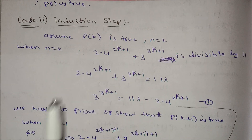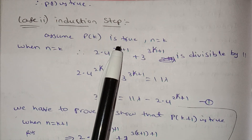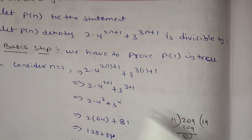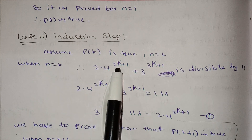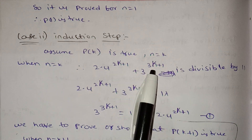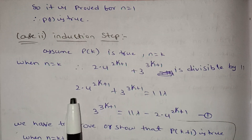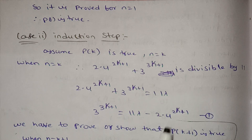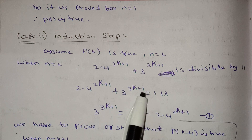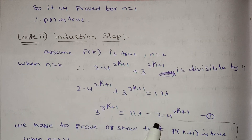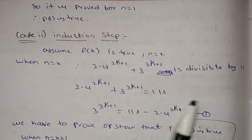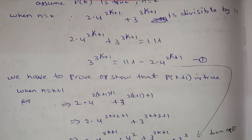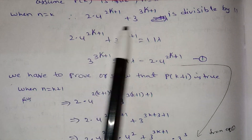P(1) is true. Next, the second step is the induction step. Assume P(k) is true when n equals k. So 2 into 4 power 2k plus 1 plus 3 power 3k plus 1 is divisible by 11. We assume 2 into 4 power 2k plus 1 plus 3 power 3k plus 1 equals 11λ. Therefore 3 power 3k plus 1 equals 11λ minus 2 into 4 power 2k plus 1. This is equation 1.